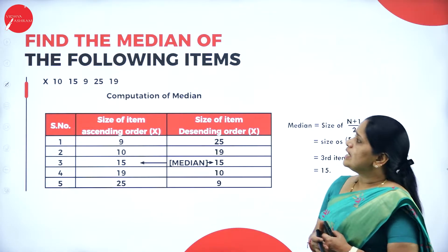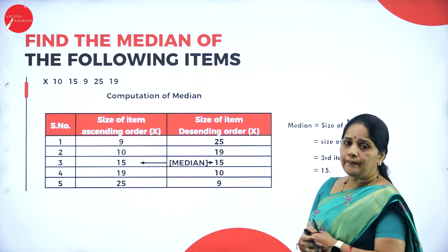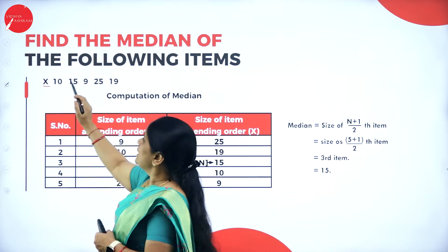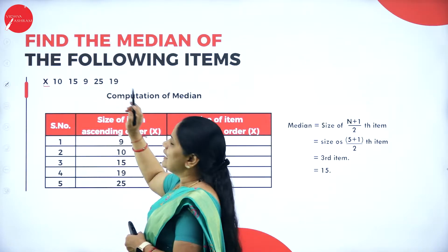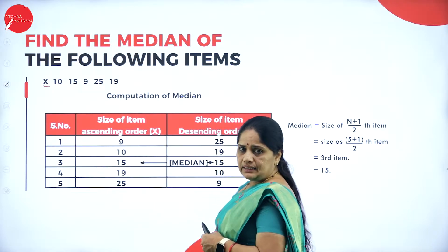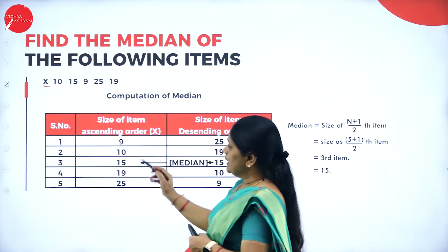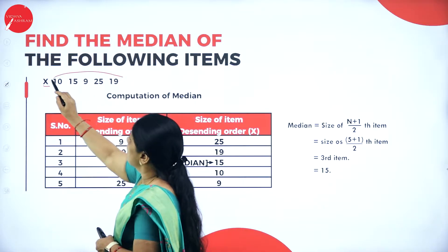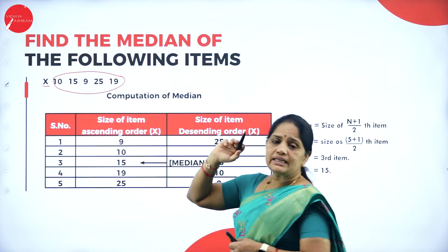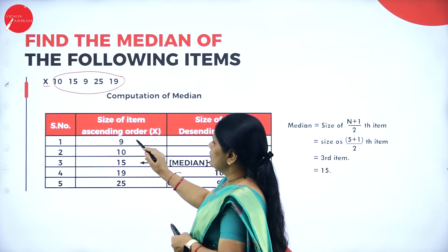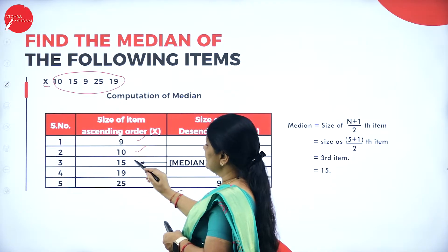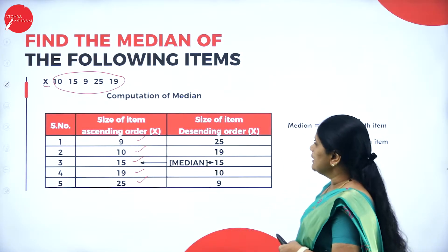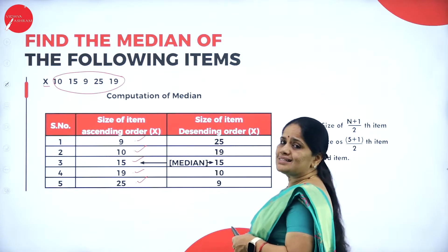Let us look at how to calculate the median. In this problem, the x values given are 10, 15, 9, 25, and 19. Writing them in ascending order: 9, 10, 15, 19, and 25. The smallest value is written first, then the second, third, fourth, and fifth. So the values are in ascending order and then we decide what is the median.